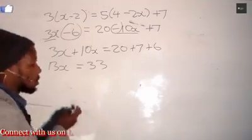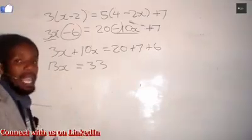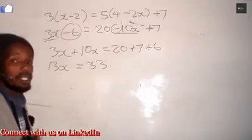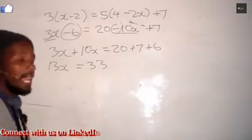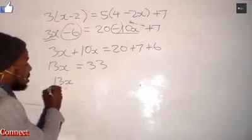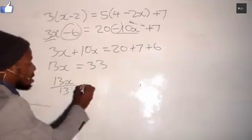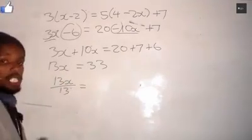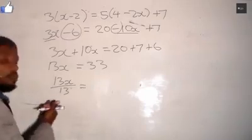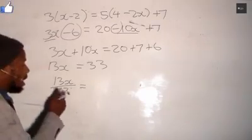But we have not solved our x because there is a 13 that is multiplying the x. To get rid of that, because it's multiplying the x, we divide by 13. So we say 13x divided by 13 equals, and we do the same thing on the right hand side because we have added a divider of 13.